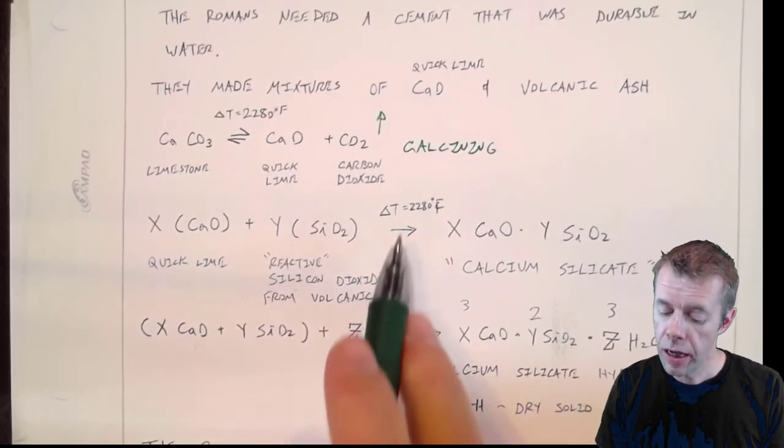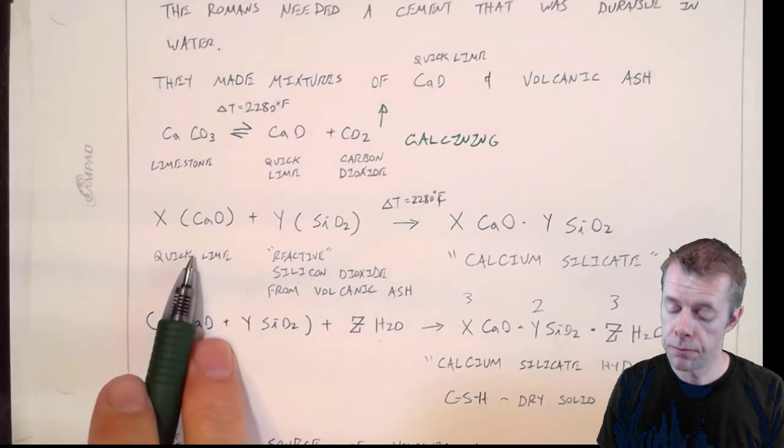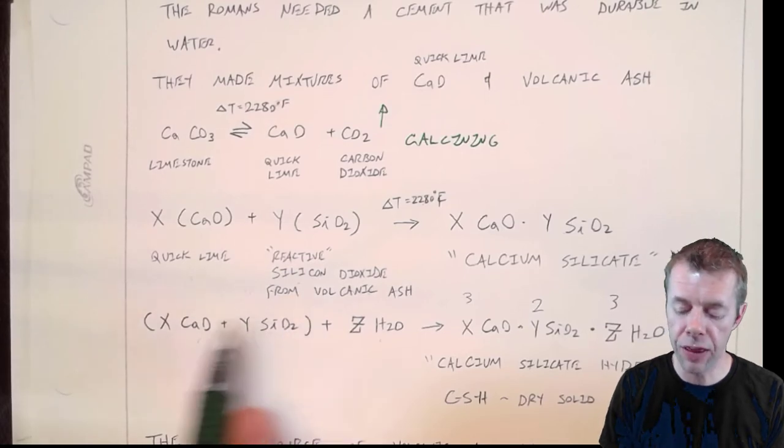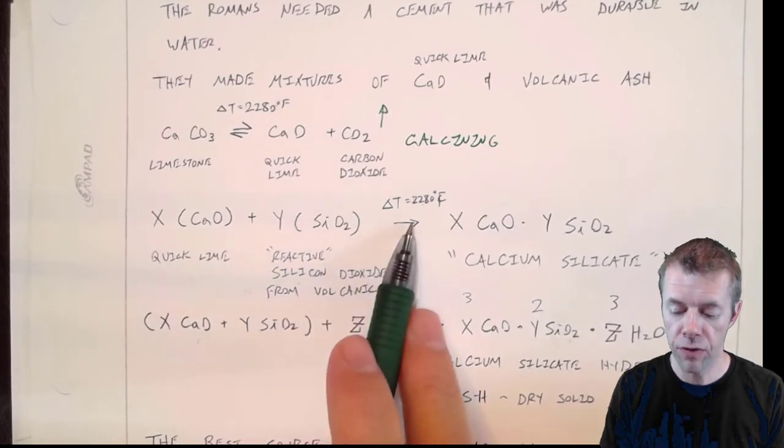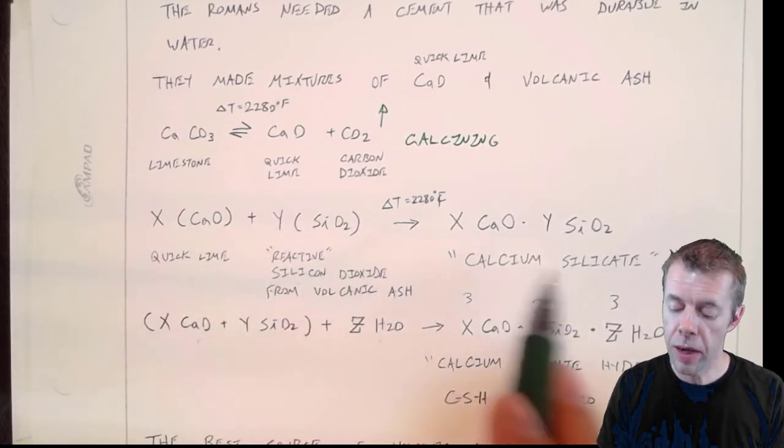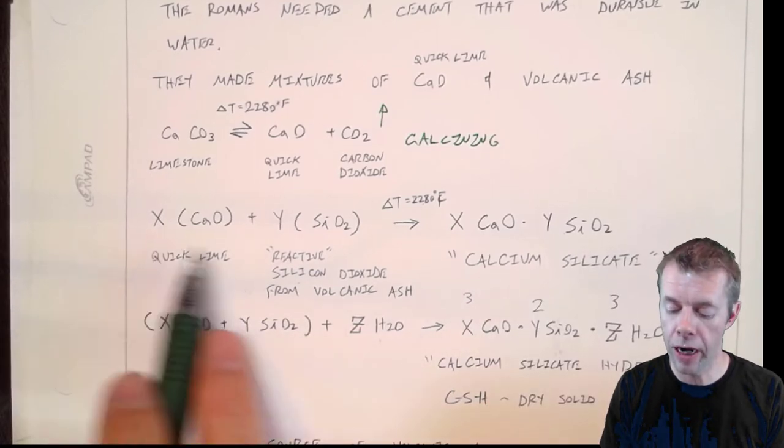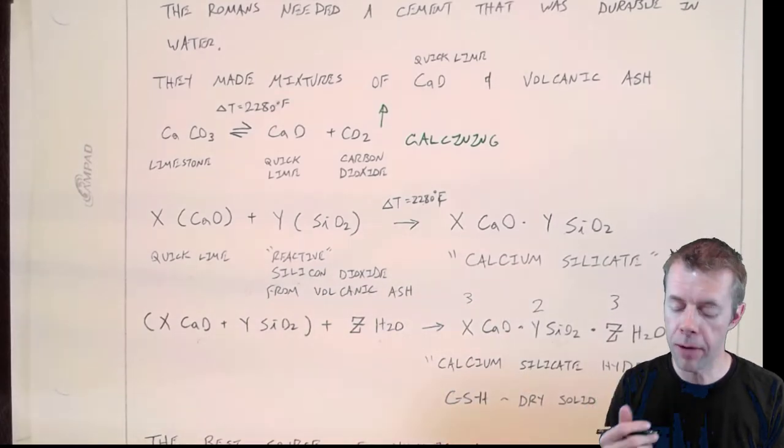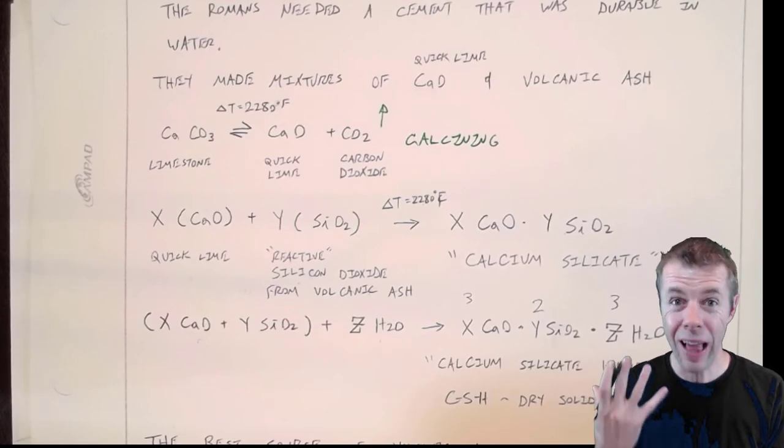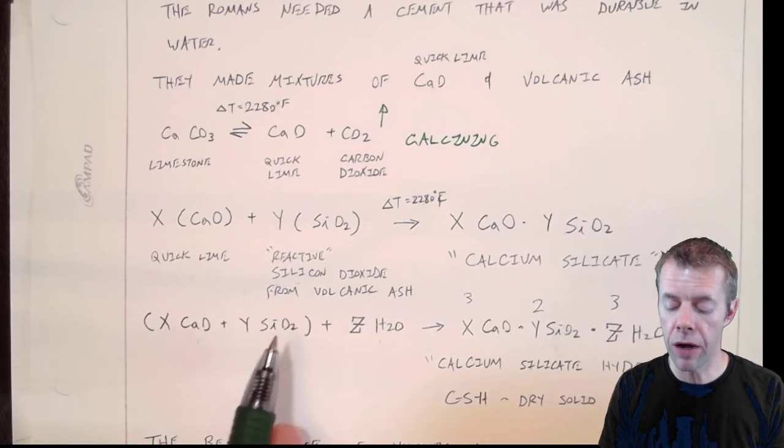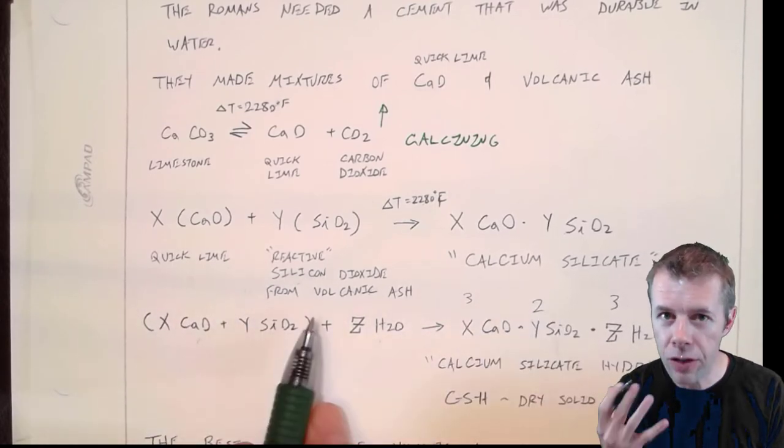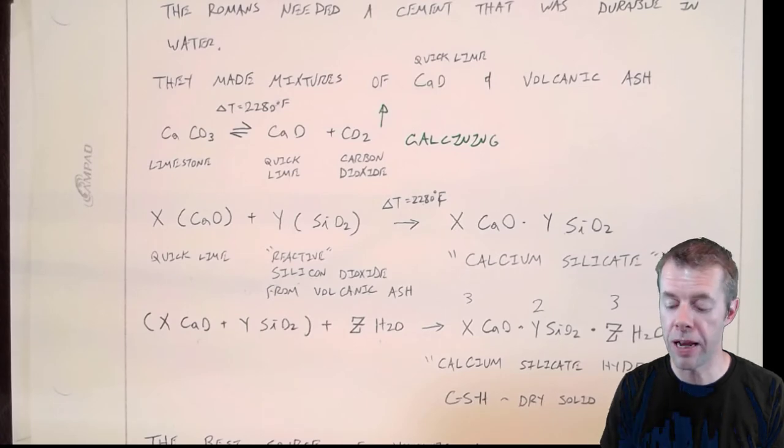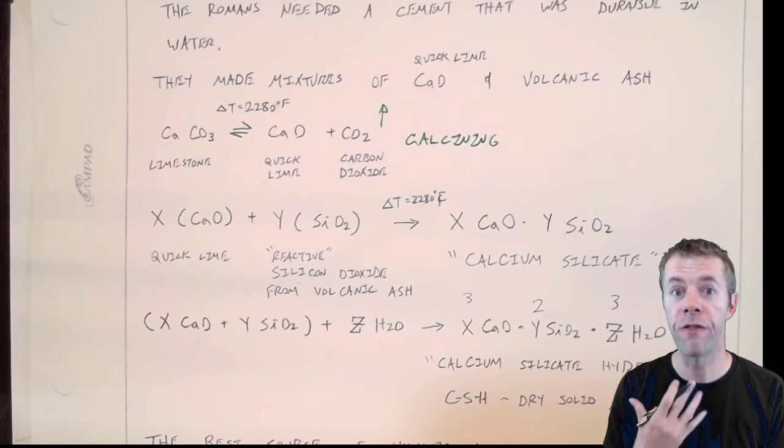But then you take this lime, and you mix it up with this reactive silicon dioxide from the volcanic ash. You basically take the lime and the volcanic ash, and then you cook that. So you've had to cook it twice. And you end up making a calcium silicate. Now you notice I have an X and a Y here, and an X and a Y here, because we don't really know the Roman recipe. We don't really know how much quicklime they used and how much volcanic ash they used, but it's likely that this reaction produced some calcium silicate and there was actually probably some volcanic ash left over. Not all the volcanic ash was used up in this reaction. And some of it was probably available for further reactions.